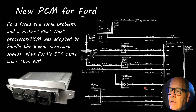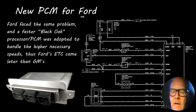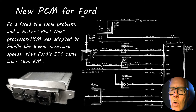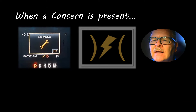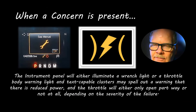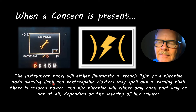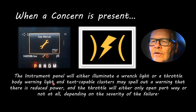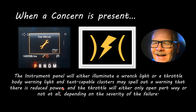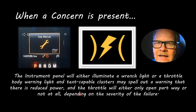On the Ford, the powertrain control module handles it all — there's the electronic motor and the TP sensor both mounted on the throttle body. When a concern is present with the electronic throttle body on a Ford, you get a wrench light on the instrument panel. Sometimes it'll limit throttle opening to about halfway, but you can switch it off and restart and you'll have full throttle until the wrench light comes on again. They've also started putting dedicated lights on some vehicles to tell you specifically what's going on — more specific than just a check engine light.